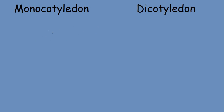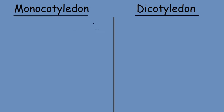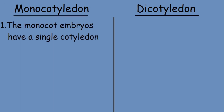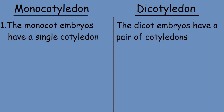Let's study the difference between monocotyledon and dicotyledon. The first point: as the name suggests, monocot embryos have a single cotyledon, while dicot embryos have a pair of cotyledons.